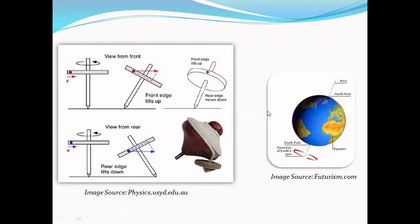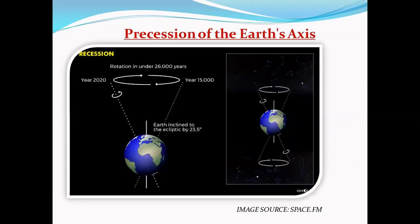Same thing is happening to our Earth also. The Earth's axis rotates or precesses just as a spinning top does. The period of precession is about 26,000 years.